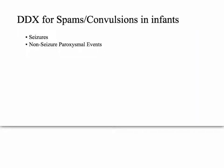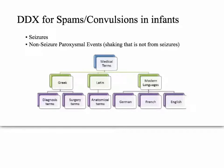Your differential diagnosis for spasm convulsion seizures in an infant is basically two things: real seizures, and then a group called non-seizure paroxysmal events. Non-seizure paroxysmal events are shaking, spasms, and convulsions that are not really seizures — they're from something else.